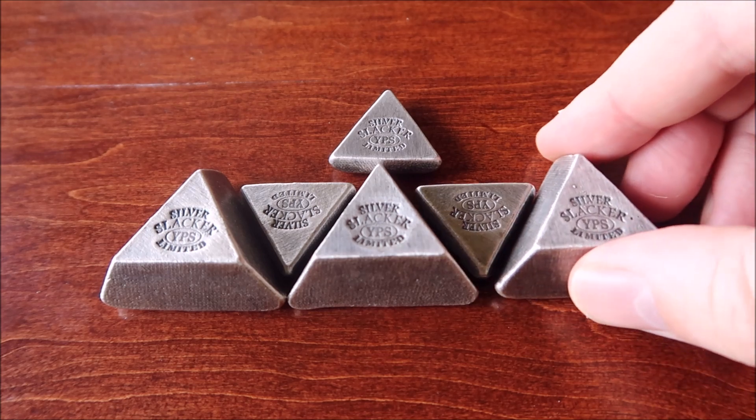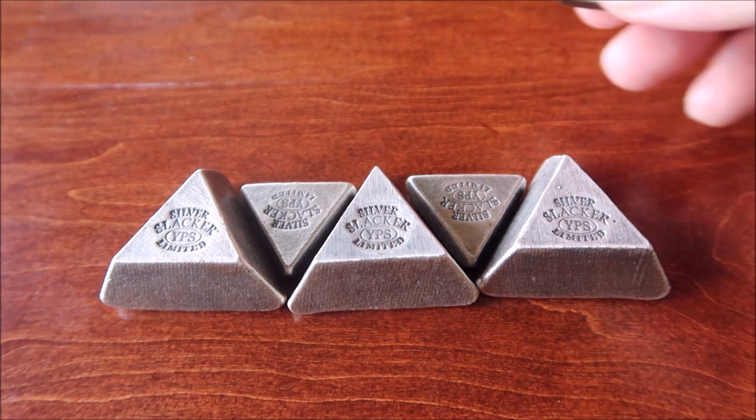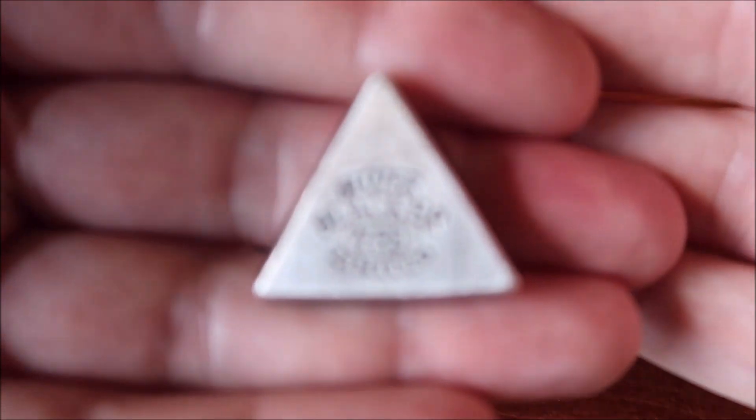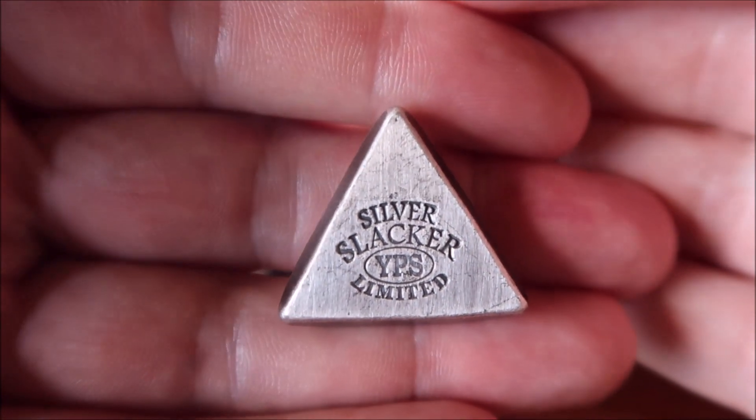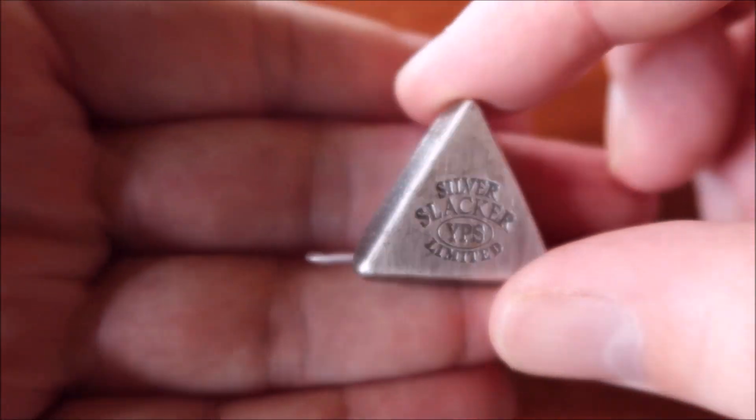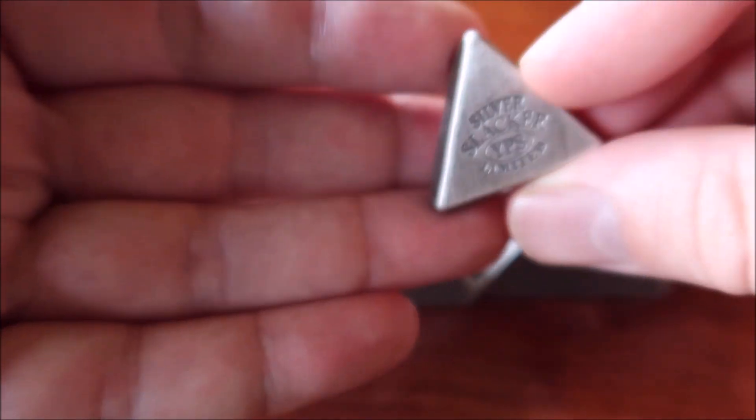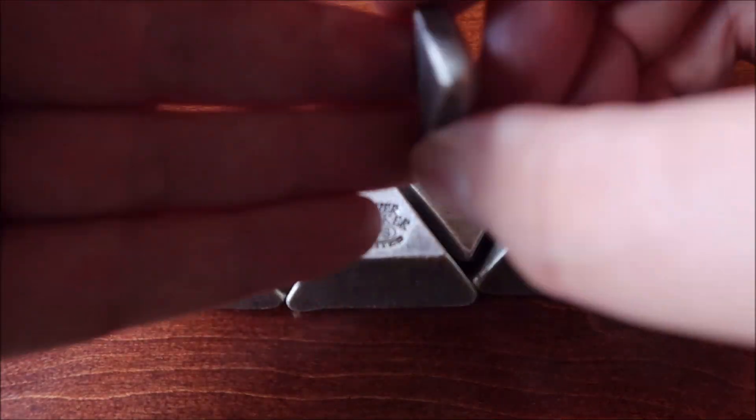The one ounce, Silver Slacker YPS Limited, it's a triangle that is starting to truncate out. The base is the same as this, but this is four ounces, so you can see it truncating more.